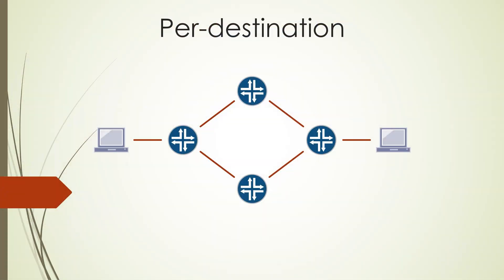Hello again. This time we're going to start by looking at how Ceph load balancing works. There are two kinds of Ceph load balancing. The first one is called per-destination load balancing. This load balances based on a particular flow of traffic. A flow, in this case, is all the traffic between a particular source and destination IP address. So this means that an entire flow will always use the same path from the source to the destination.